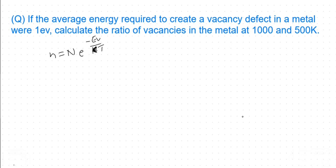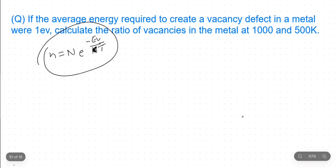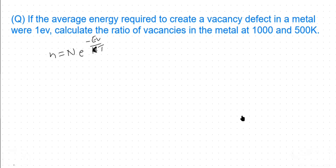Where k means Boltzmann constant, T means absolute temperature, E_V means average energy required to create one vacancy defect, small n means the density or number of vacancy defects, and capital N means the number of atoms.